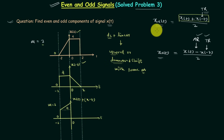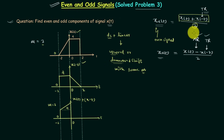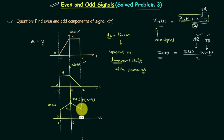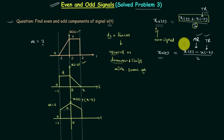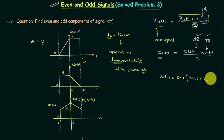X(t) plus X(-t) is the numerator of the even component. Since we divide this numerator by a constant value of 2, the signal X(t) plus X(-t) will itself be even. We have obtained the left-hand side and to obtain the right-hand side there is no need for further calculations — we simply take the mirror image of the left-hand side.